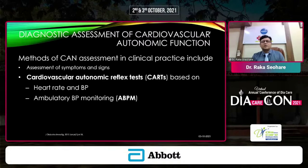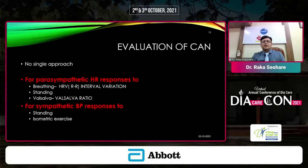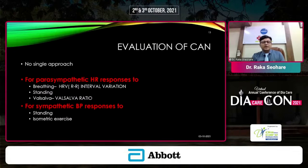For diagnostic assessment of cardiovascular autonomic neuropathy, we use CART — Cardiovascular Autonomic Reflex Tests — which are the gold standard because they are reproducible, can be repeatedly checked, and are based on heart rate and blood pressure monitoring including ambulatory BP monitoring. For the parasympathetic system, we assess heart rate response to deep breathing, standing, and the Valsalva maneuver to calculate the Valsalva ratio. For sympathetic assessment, we use BP response to standing and isometric exercise.